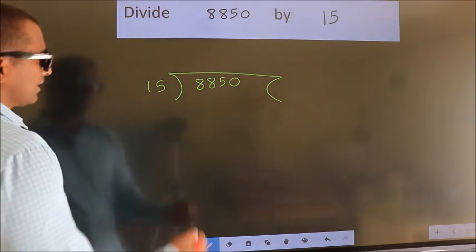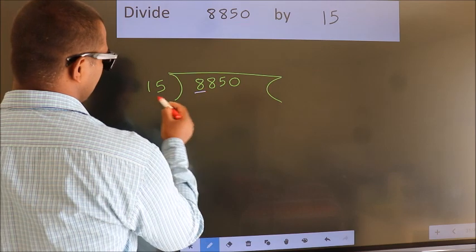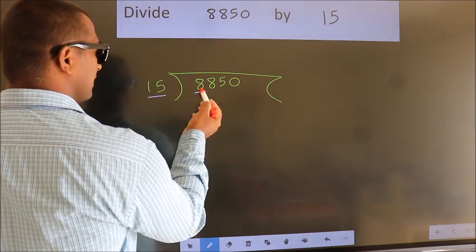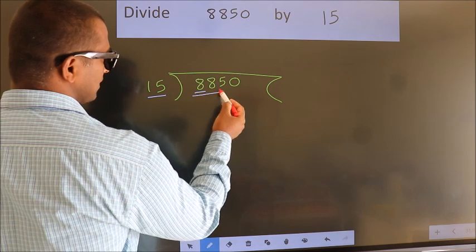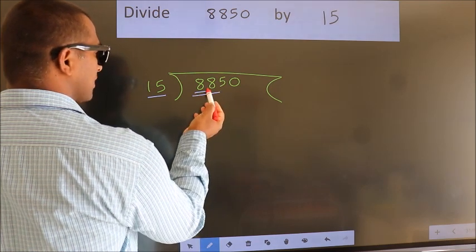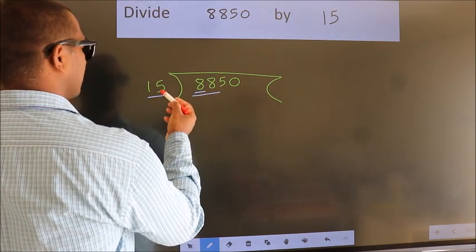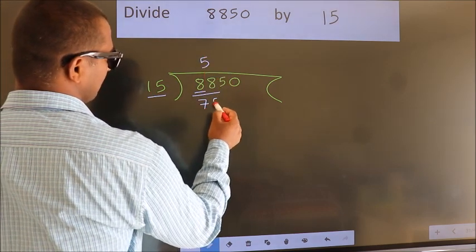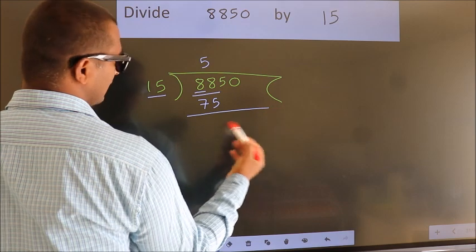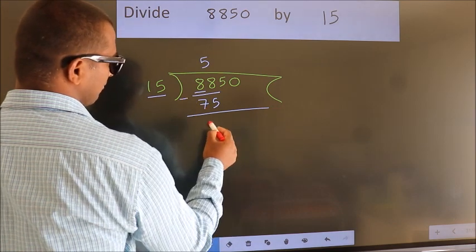Next. Here we have 8, here 15. 8 smaller than 15. So we should take two numbers, 88. A number close to 88 in 15 table is 15 fives, 75. Now we should subtract. We get 13.